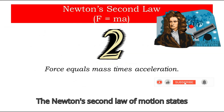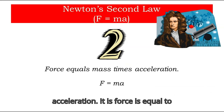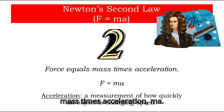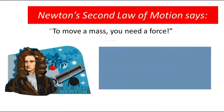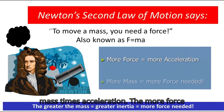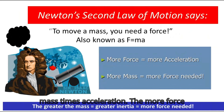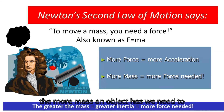Newton's second law of motion states that force equals mass times acceleration: F = ma. Acceleration is a measurement of how quickly an object is changing its speed. To move a mass you need a force — the more force you apply, the more acceleration is produced, meaning the object is changing its speed more quickly. The more mass an object has, the more force we need to apply.